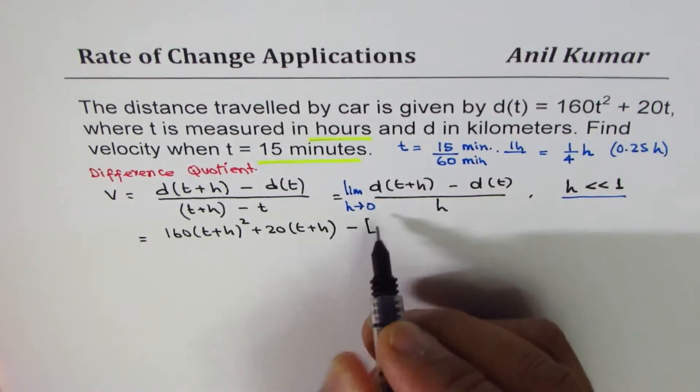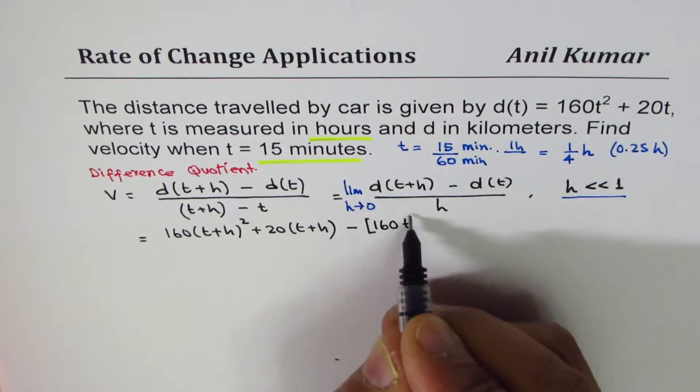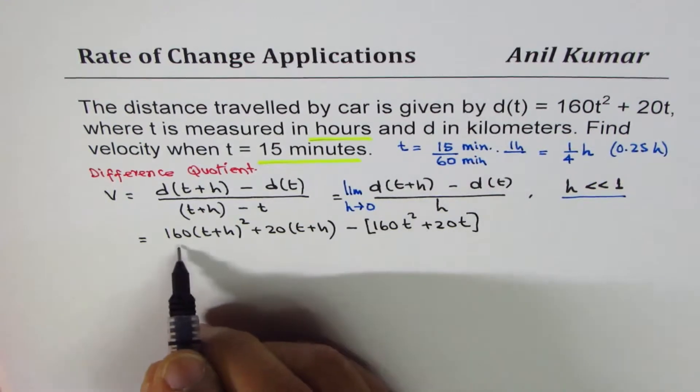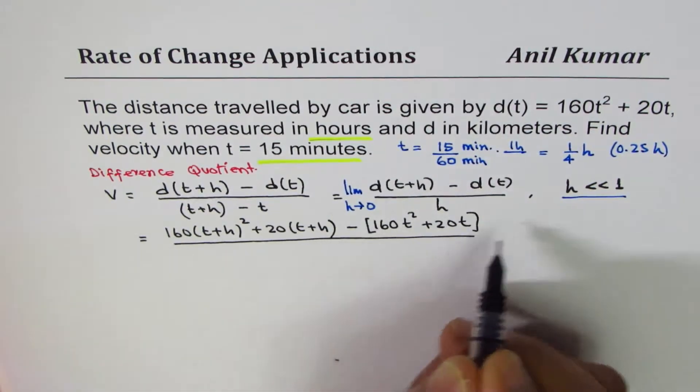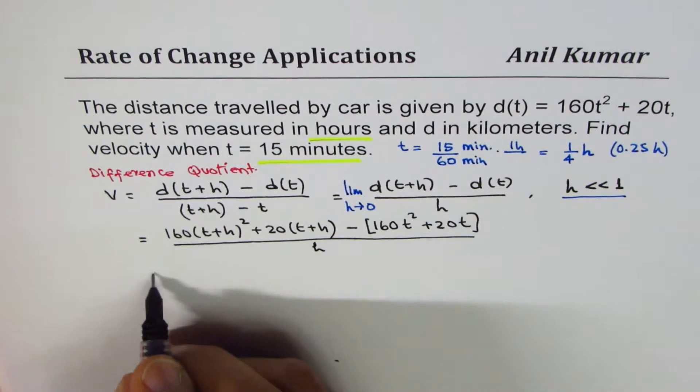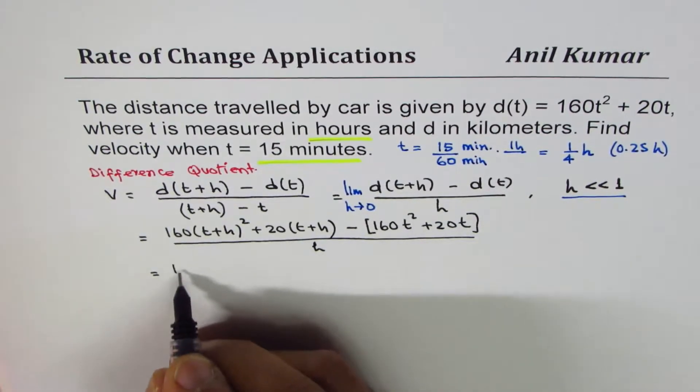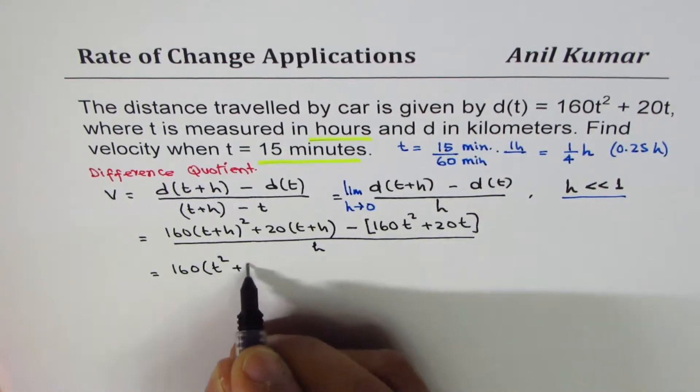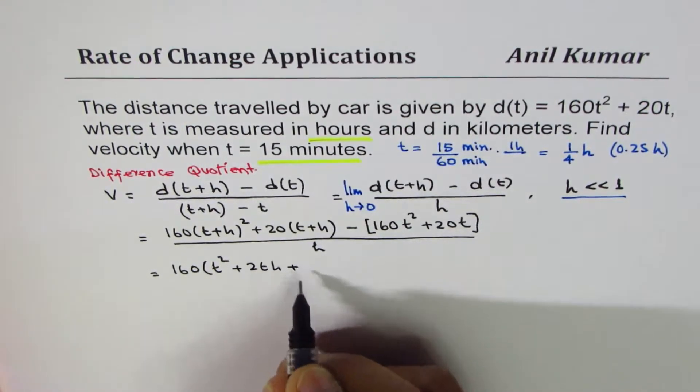d(t+h) minus d(t) is same thing, so we'll be writing 160t² + 20t divided by h. Now this is equal to, let's open the bracket, 160 expand this term.